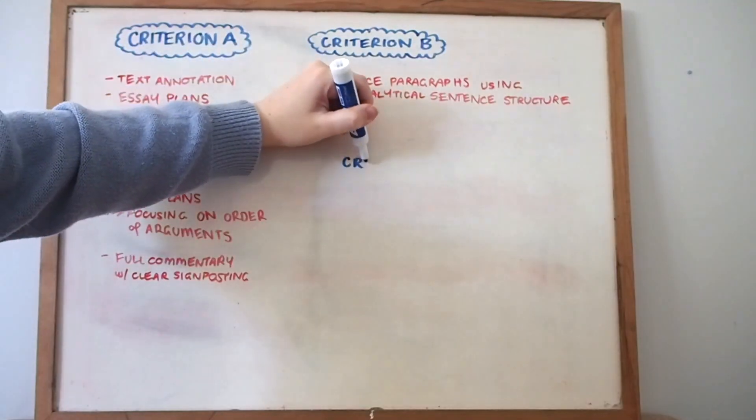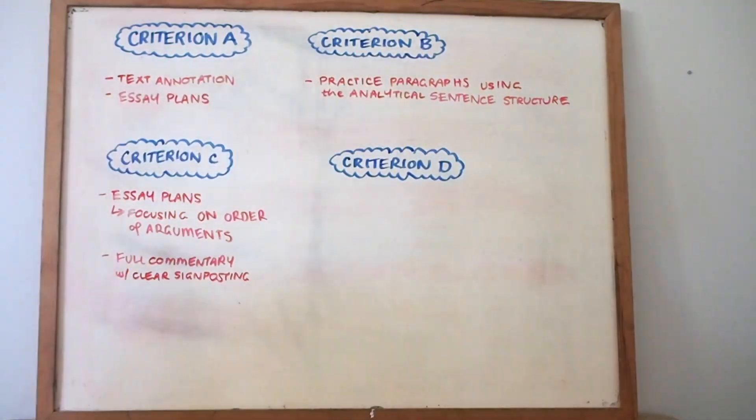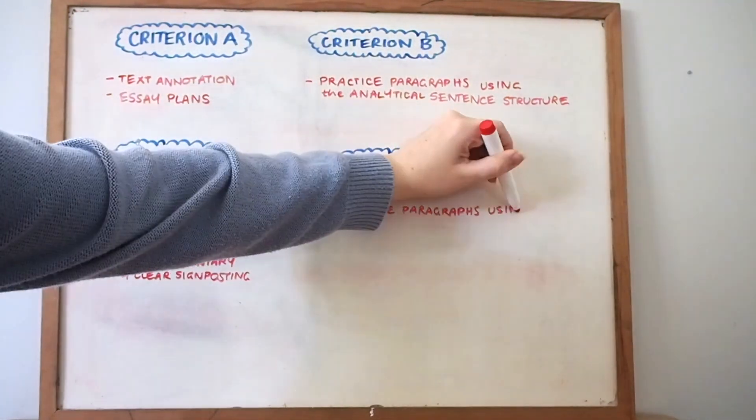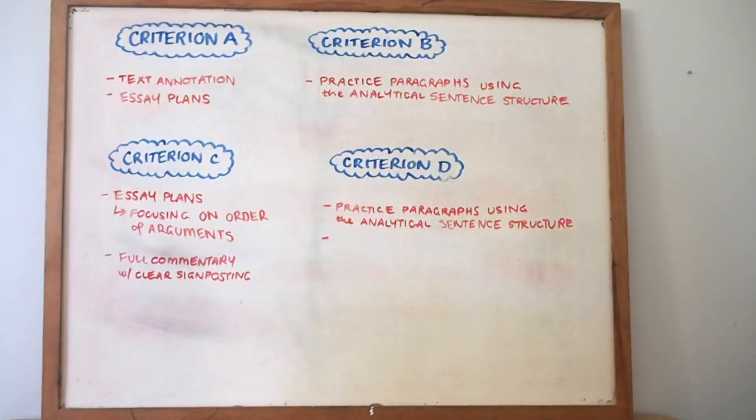And then finally for criterion D which is about your writing style within your essay, I also had two exercises which I would use. Firstly, again focusing on the analytical sentence structure and writing practice paragraphs with that. By using that analytical sentence structure you'll instantly introduce a cohesiveness to your writing that will make it easier for the marker to read.